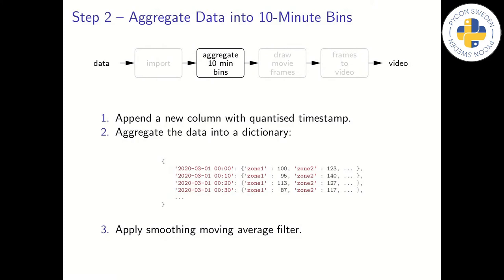Step 2, data aggregation. In the aggregation step, we create a new column containing a quantized version of the existing timestamp column. The quantized timestamp column will have a resolution of 10 minutes. Then, we stream all the data through a program that creates a dictionary from quantized timestamps to count of taxi trips per zone. Each item in the dictionary corresponds to one still frame of the animation. And the aggregation is several orders of magnitude smaller than the original input data.